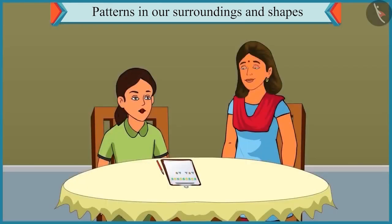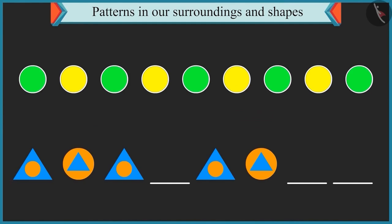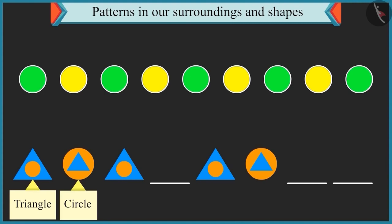This pattern is very easy. Now look at the second pattern. This pattern is made of two shapes — triangles and circles. There is a small circle shape inside the triangle, and after that there is a small triangle shape inside the circle. This pattern is repeated again and again.